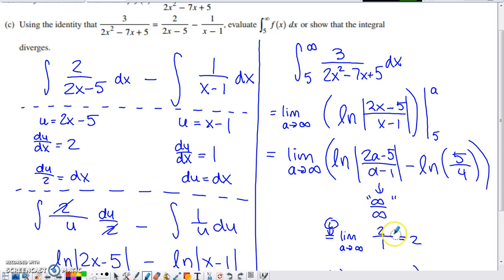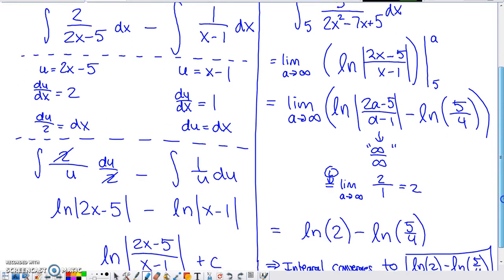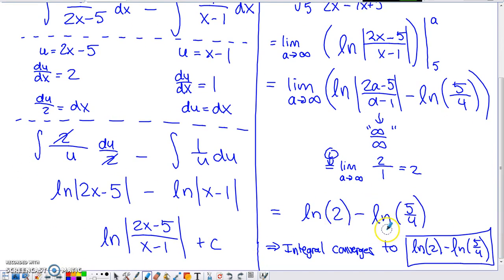So, what we end up with is we end up with the natural log of 2 minus the natural log of 5 fourths, and that is what the integral is going to converge to. We don't end up with an infinite value here or a limit that doesn't exist. Therefore, the integral does not diverge. The integral is going to converge to this value right here.